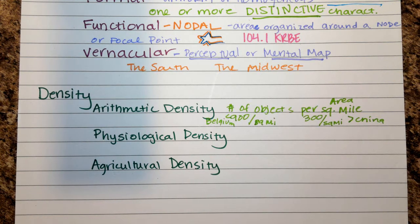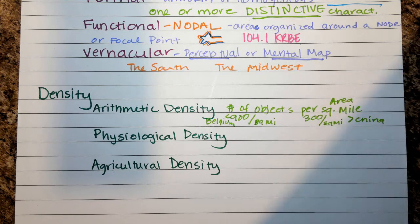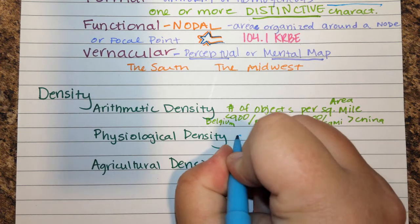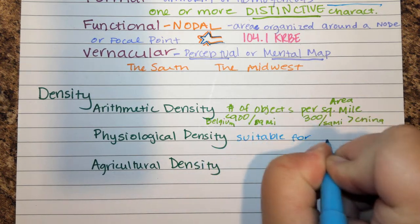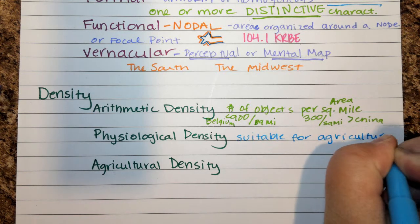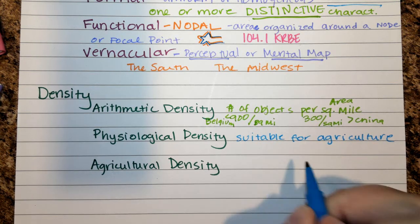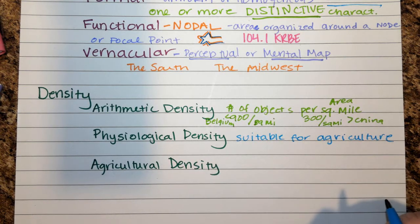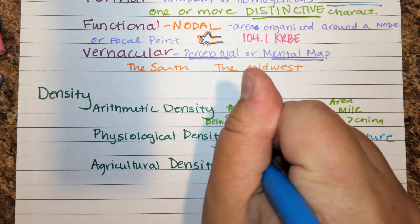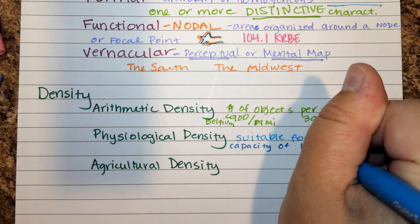When we're looking at physiological density, this is the number of people per unit of area that is suitable for agriculture. It plays into whether you can feed your people and get them the food access they need. Essentially, physiological density tells us whether the land can sustain the amount of people living there — the capacity of land to sustain people.